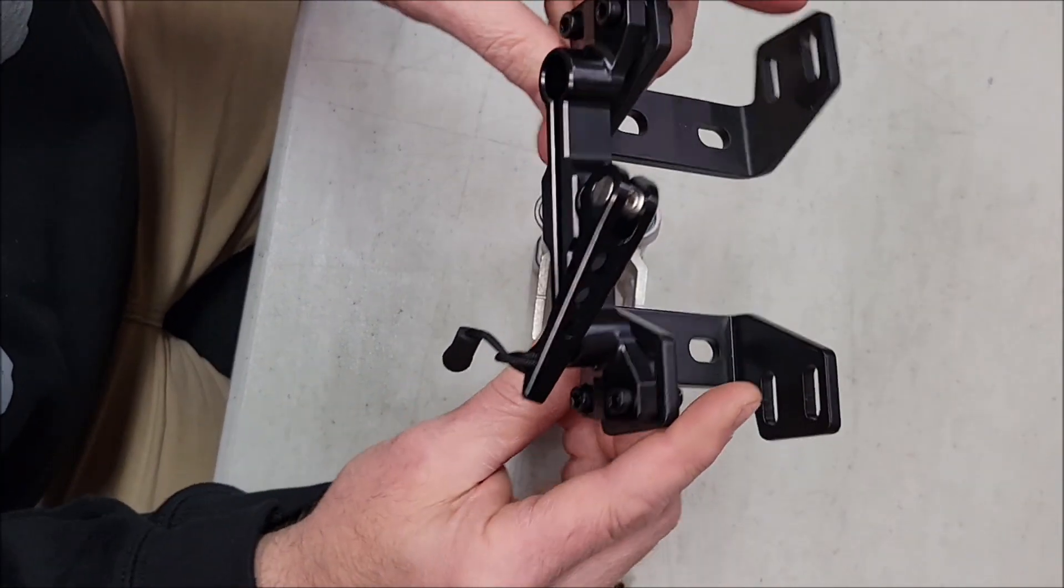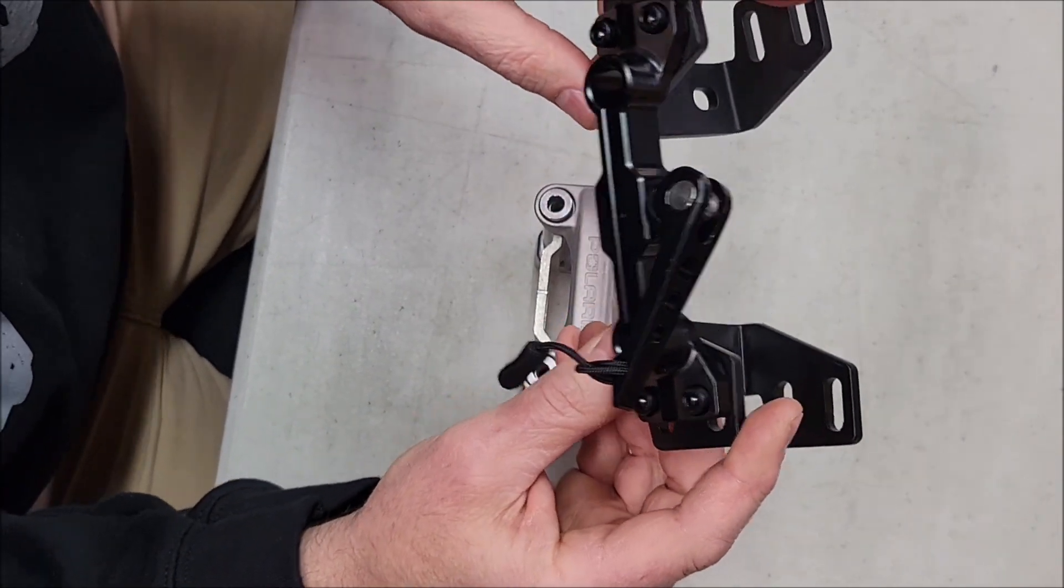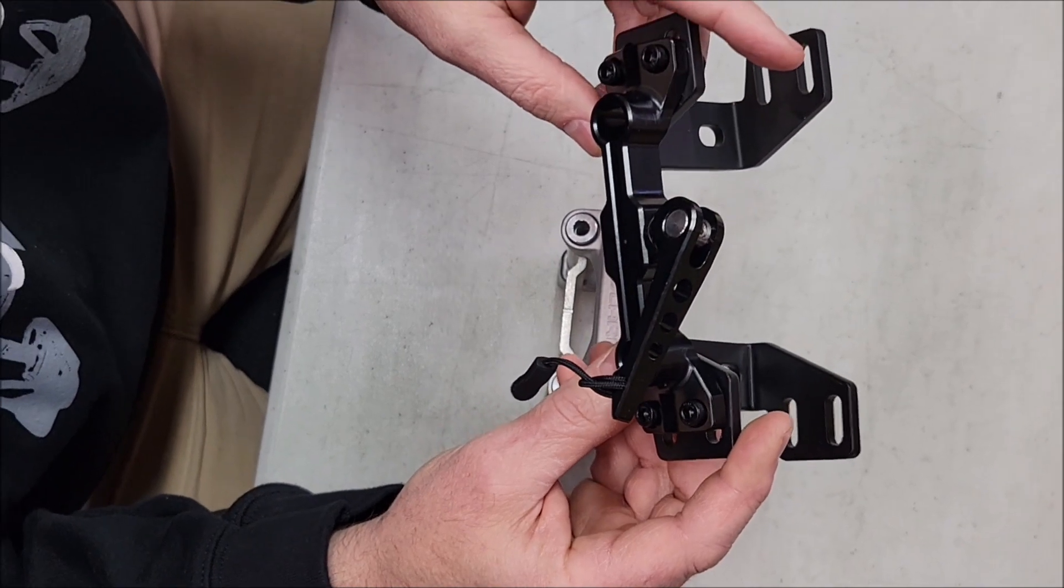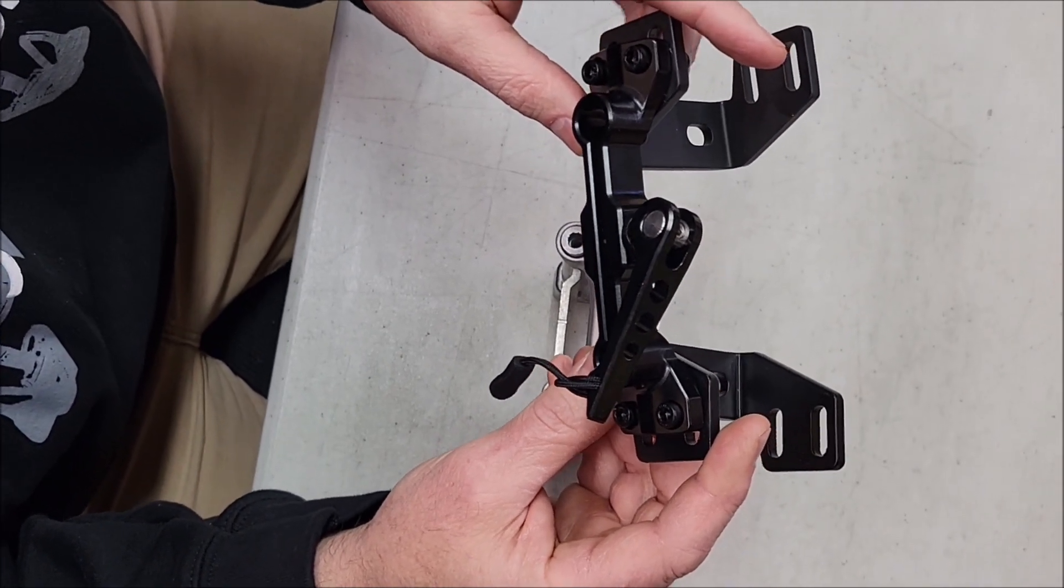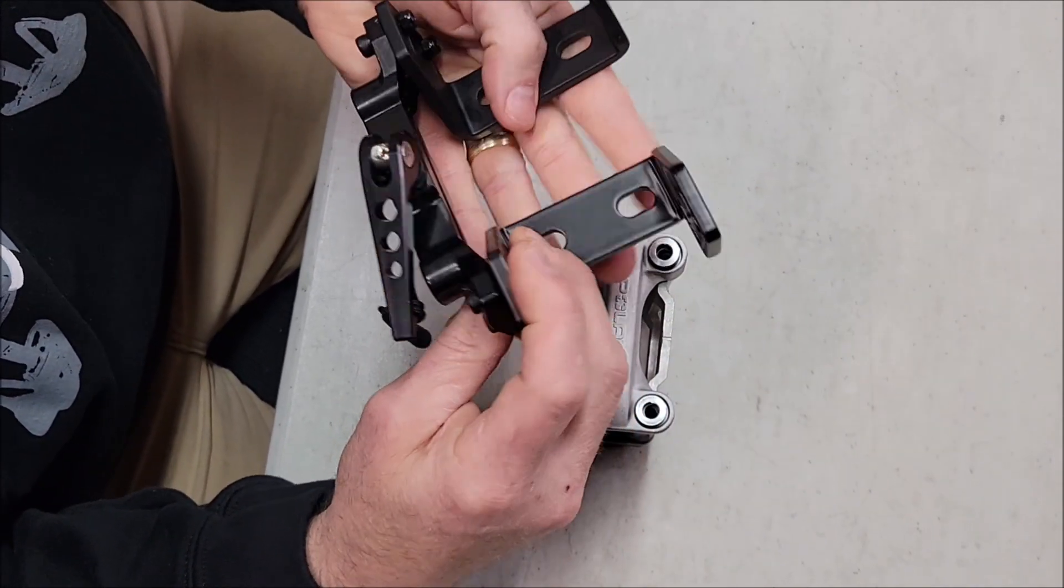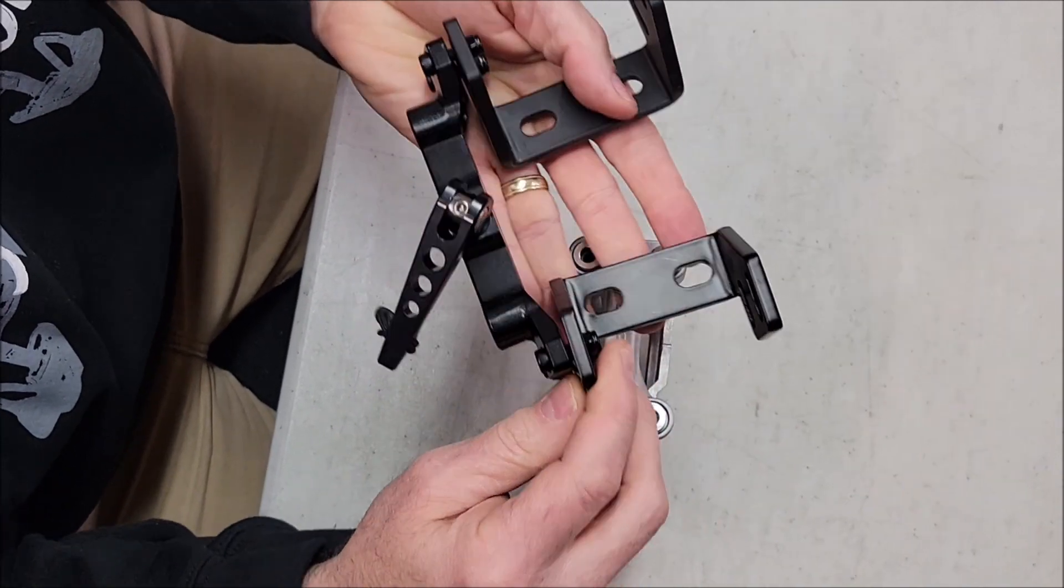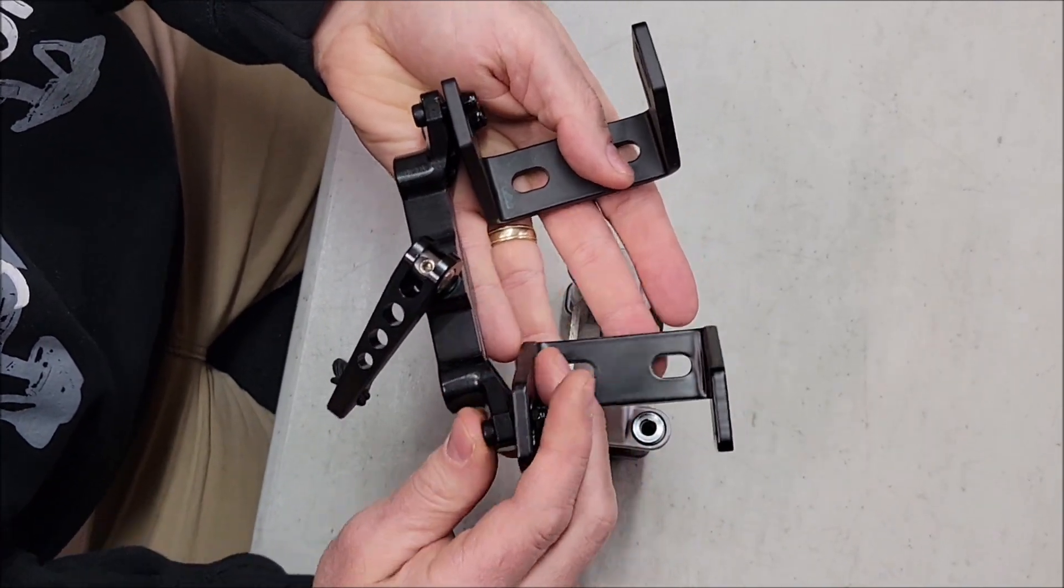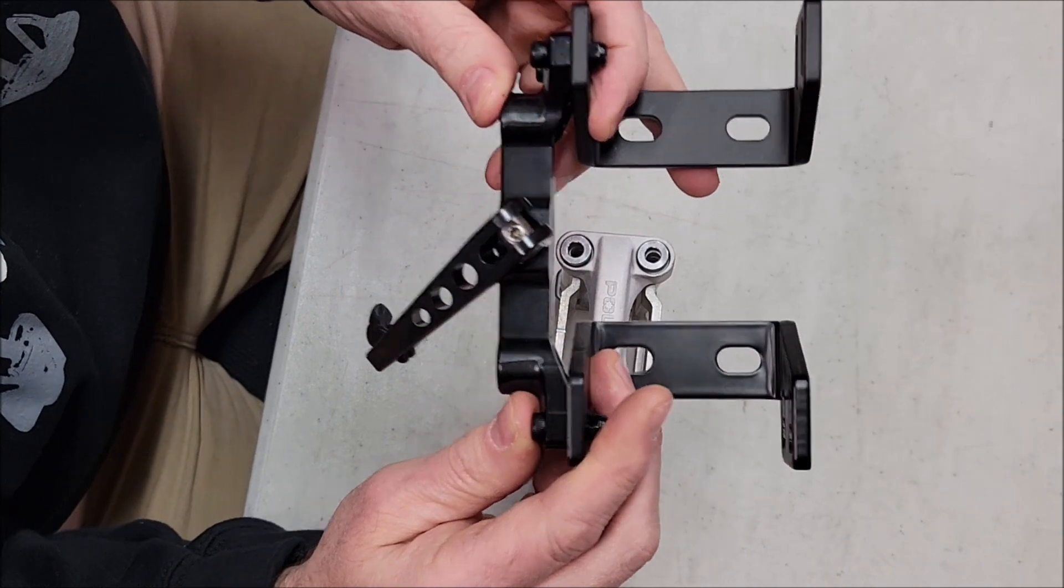You're going to take your kit and decide if you need to run it in the lift position or in the standard position. This is the lift position where the brackets are actually sticking up. Most Matrixes, the trail sleds, it's going to require it to go up.